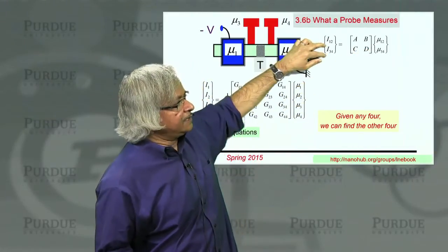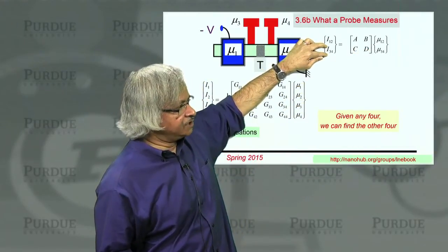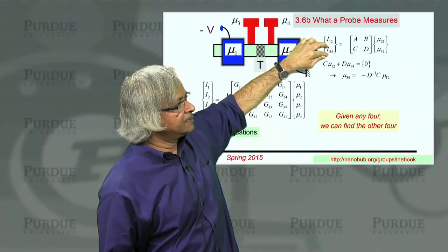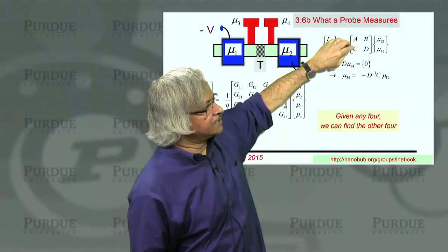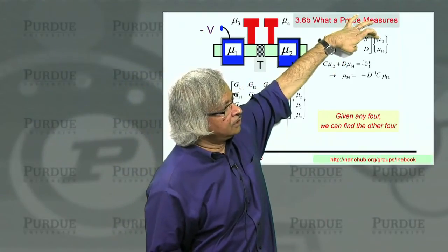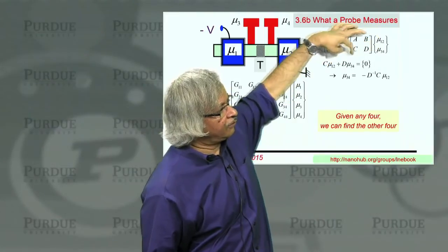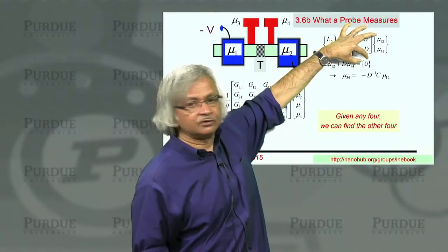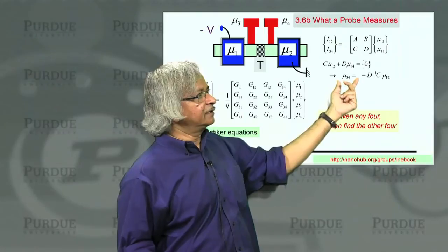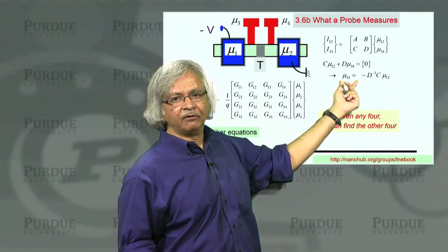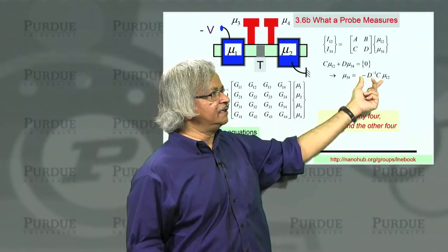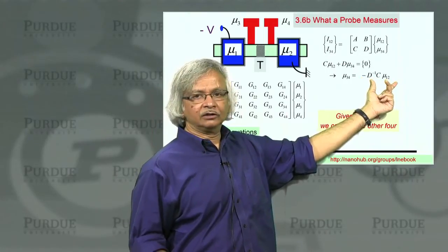So now we say that I3 and I4 need to be zero. So what that means is, what is I3,4? It's C times mu1,2 plus D times mu3,4. And that must be equal to zero. And now with little matrix algebra, I could write mu3,4 as negative D inverse C times mu1,2. Note, this is a two by two matrix. That's a two by two matrix. This is a two by one column vector. So when you multiply it all out, you get a two by one column vector.